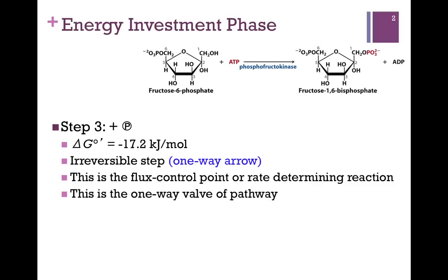Remember, there are three possible flux control points. This is the actual flux control point, or the rate-determining step, where we control flow through the pathway. In a later video, we'll see why this particular step. For now, let's just look at the regulation of this pathway and of this enzyme in particular.